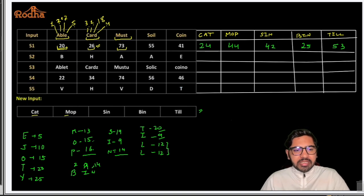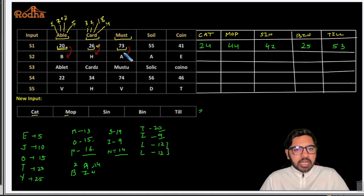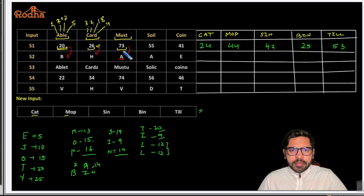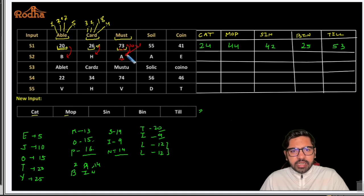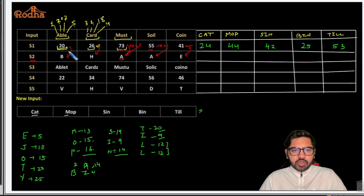Now for step two: twenty becomes B, twenty-six becomes H, seventy-three becomes A. There's a trick here. Seven plus three equals ten; one plus zero equals one — first letter is A. Five plus five equals ten; one plus zero equals one — again A. Four plus one equals five — fifth letter is E. So I'm finding the digital sum of these numbers and replacing with the corresponding alphabet. Two plus four is six, so that gives F.